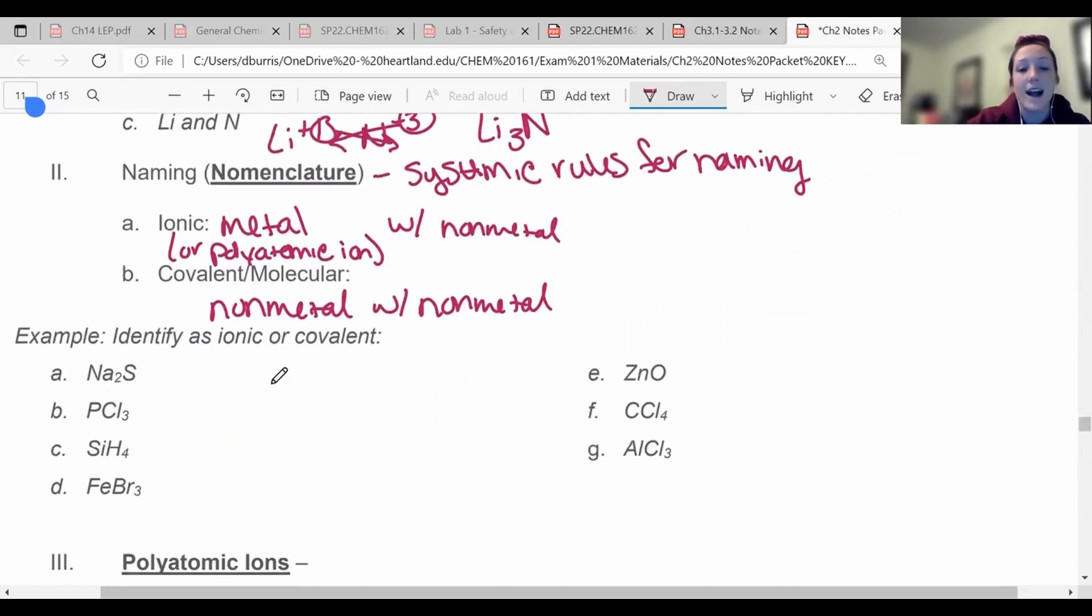So before you start to try to name something, you have to determine if it is ionic or if it's covalent. So we're going to do that first. This example says to determine if you're ionic or covalent. So that means you have to know where the metals are and where the nonmetals are. Sodium is in group one, that is a metal. Sulfur is a nonmetal, so this one has to be ionic. Phosphorus and chlorine are both nonmetals, so this one's going to be covalent. Silicon and hydrogen. Silicon is actually a metalloid, so I need to list that here.